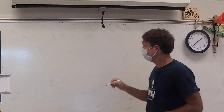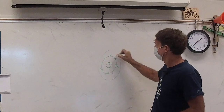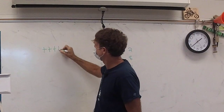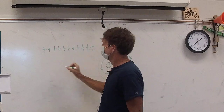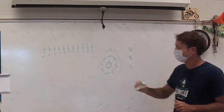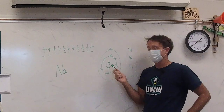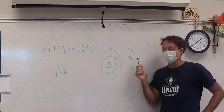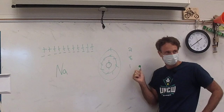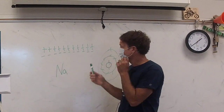Let's take a look at sodium. Here's a Bohr model of sodium: 2, 8, 1. Sodium has 11 protons and 11 electrons. That is why a neutral atom of sodium is neutral — because 2, 8, and 1 add up to 11. Sodium is number 11 on the periodic table, which means it has 11 protons. If it's neutral, it also has 11 electrons.